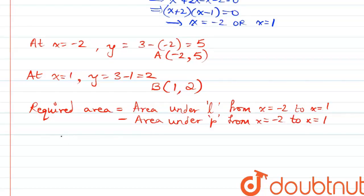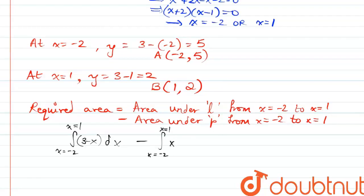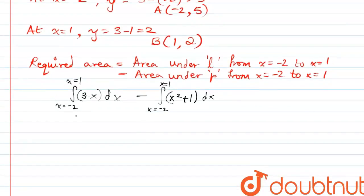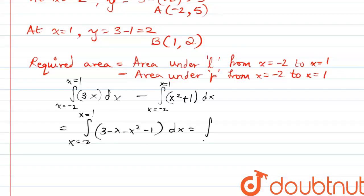This area is the integral from x equal to negative 2 to x equal to 1 of the line equation, which is 3 minus x, dx, minus the integral from x equal to negative 2 to x equal to 1 of the parabola, which is x squared plus 1, dx. We can combine these into a single integral from negative 2 to 1 of 2 minus x minus x squared dx.